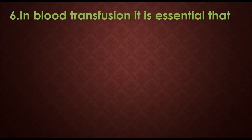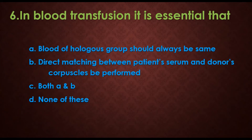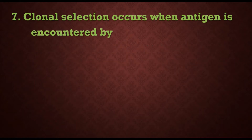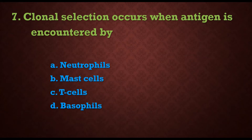Sixth question: in blood transfusion it is essential that — options are: a) blood of homologous group should always be the same, b) direct matching between the patient's serum and donor's corpuscles be performed, c) both a and b, d) none of these. The answer is c) both a and b. Seventh question: clonal selection occurs when an antigen is encountered by which cell? The answer is c) T cells.